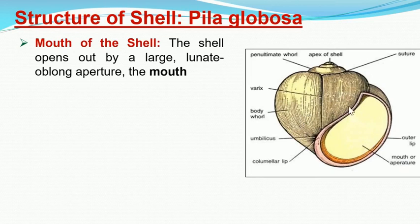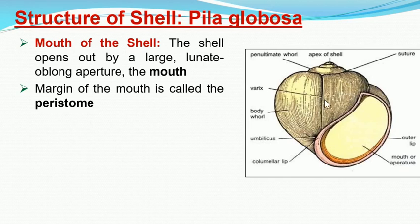The opening of the shell is a lunate oblong-type aperture called the mouth or aperture. This opening portion of the shell is bounded by two lips, and the entire margin of this portion is called the peristome. The mouth is bounded by an outer lip and an inner lip; the inner lip is also called the columnar lip.